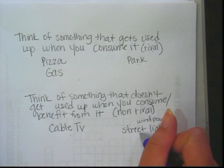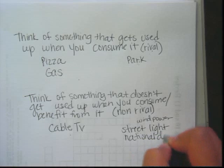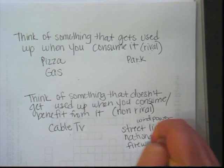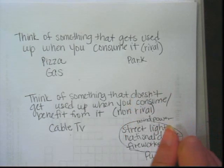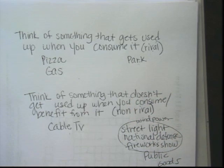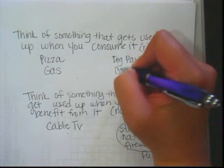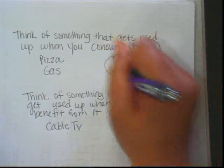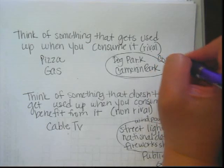A streetlight or national defense — you can even think of a fireworks show — these are all examples of public goods. The dog park and Cameron Park are examples of common resources.